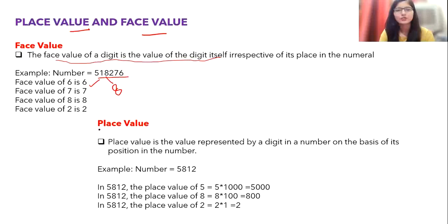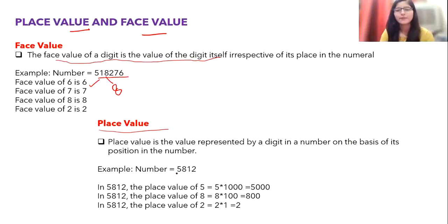The place value is the value represented by a digit based on its position in the number. Unlike face value, position matters here. For example, in 518276, the digit 5 is in the thousands position so its place value is 5 × 1000 = 5000. The digit 8 is in the hundreds position so its place value is 8 × 100 = 800. The digit 2 is in the units place so its place value is 2 × 1 = 2.